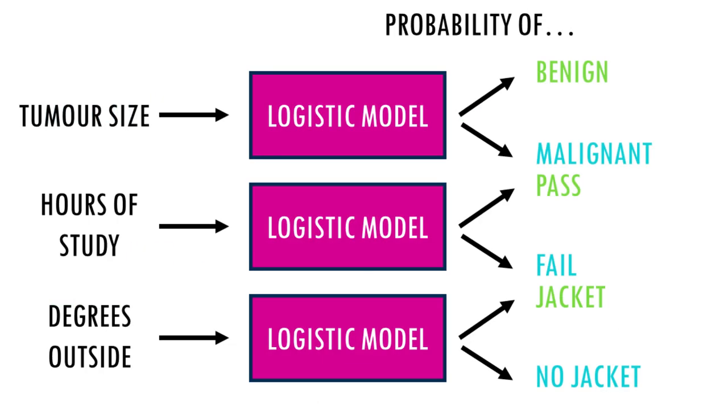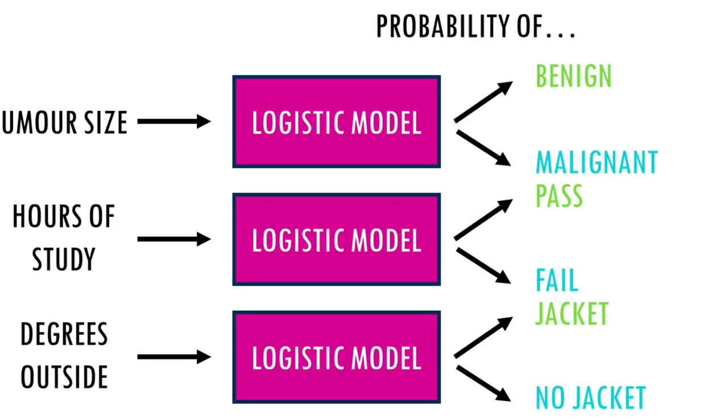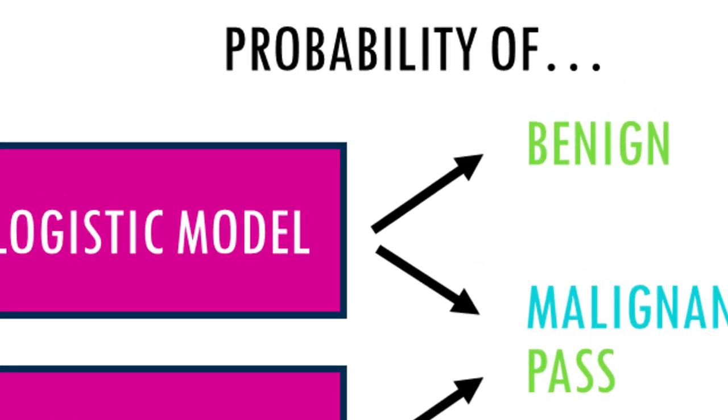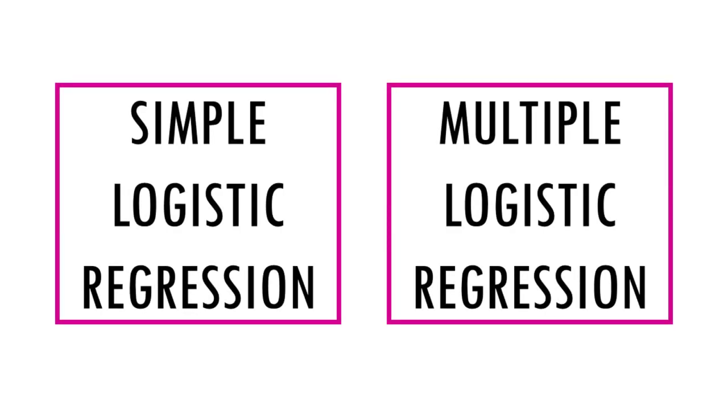So in a way, logistic regression converts a predictor variable into a probability of something happening or not happening. You have simple or multiple logistic regression depending on if you have one predictive variable or more.